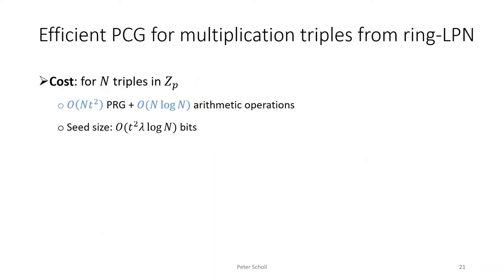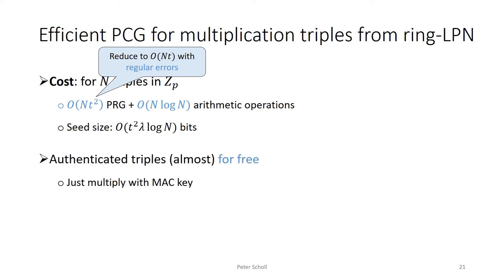Instead of O(n²) cost to produce n triples in ZP, we've managed to reduce this significantly. Concretely, the DPF expansion phase requires O(n·t²) PRG operations, which can be reduced further using other techniques. The polynomial products require O(n log n) arithmetic operations. The seed size requires around t² DPFs, which is t²·λ·log n bits. One nice thing about this construction is that we can go from multiplication triples to authenticated triples almost for free by multiplying everything with the random MAC key. Since multiplying by a scalar doesn't affect sparsity, this only has around a factor-2 overhead on the basic construction.